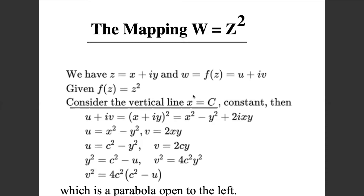First we find u and v by substituting z = x + iy into f(z) = z². So (x + iy)² = x² − y² + 2ixy, giving u = x² − y² and v = 2xy. Now put x = c: u = c² − y² and v = 2cy.